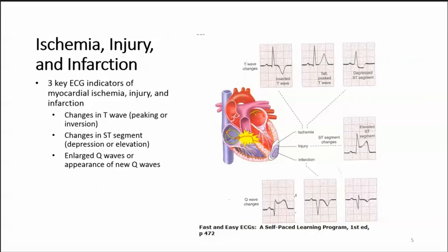Ischemia, injury, and infarction: three key ECG indicators of myocardial ischemia, injury, and infarction are: 1) changes in the T wave, either peaking or inversion; 2) changes in the ST segment, either depression or elevation; and 3) enlarged Q waves or appearance of new Q waves. You will usually see all three changes during an MI, but any one of these changes may occur by itself. Ischemia may be transient, such as angina, or it can be related to MI.